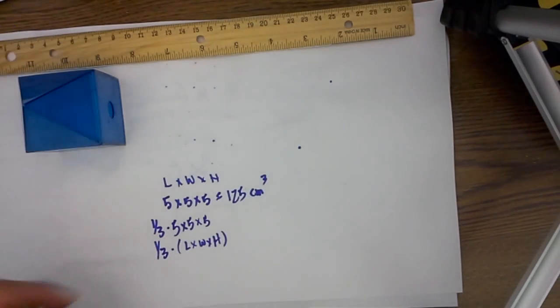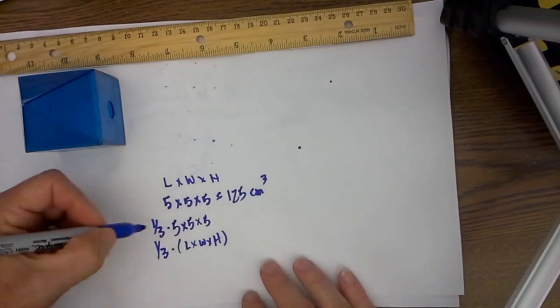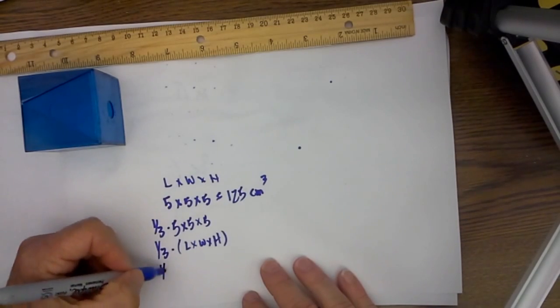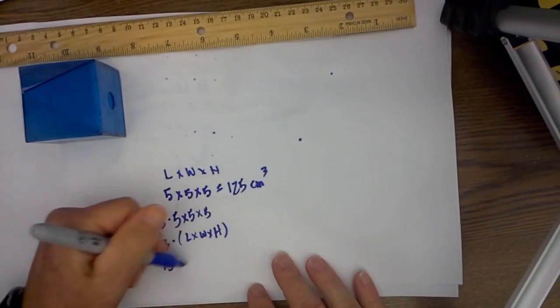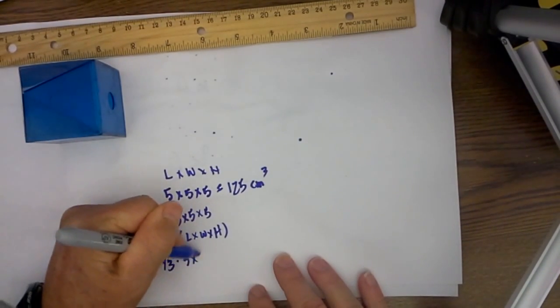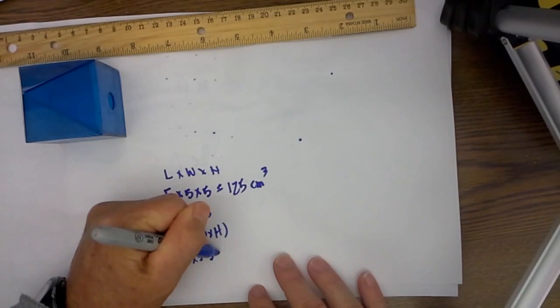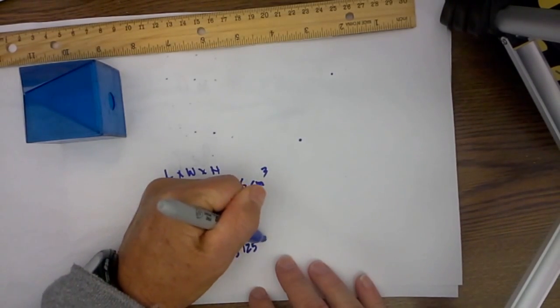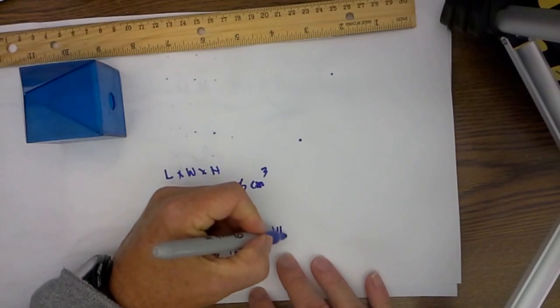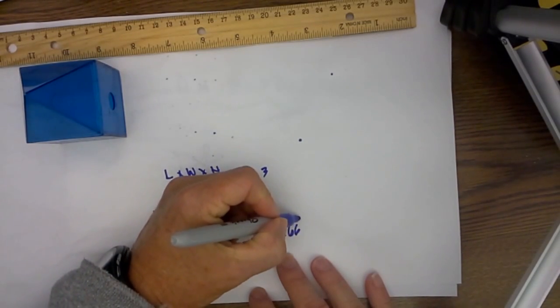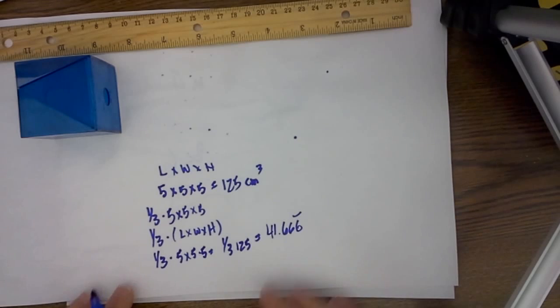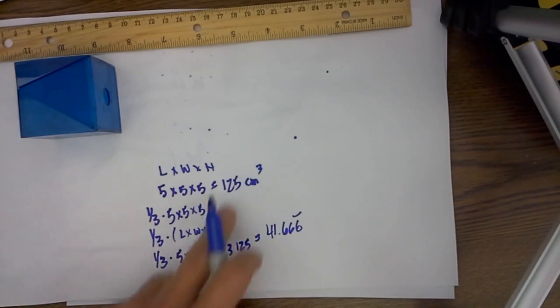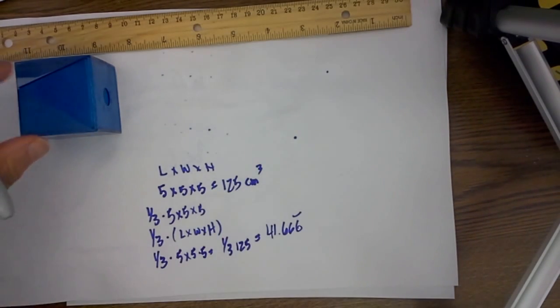So if I plug this into the formula we have one third times 5 times 5 times 5 which is equal to 41.666 repeating and that is exactly one third of 125.